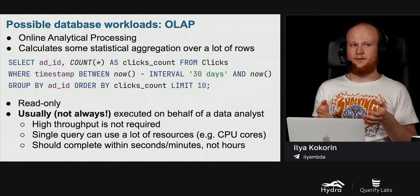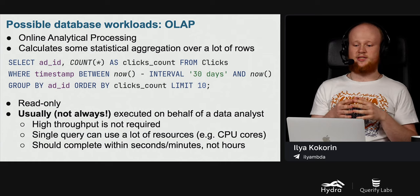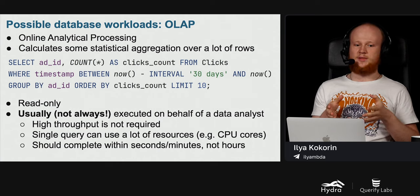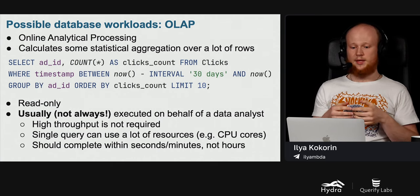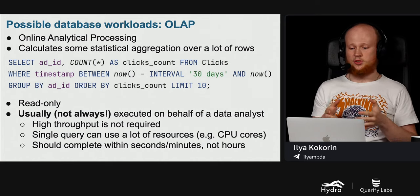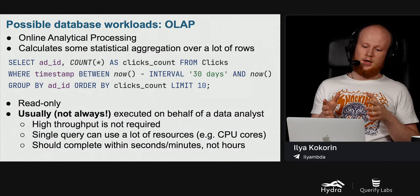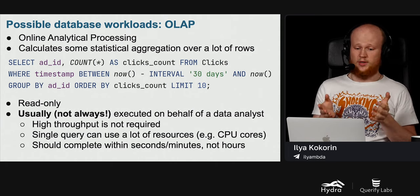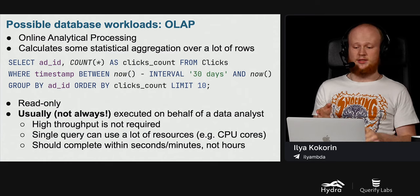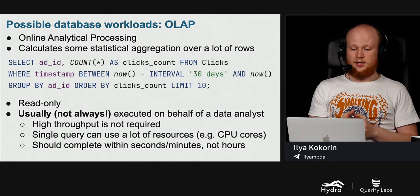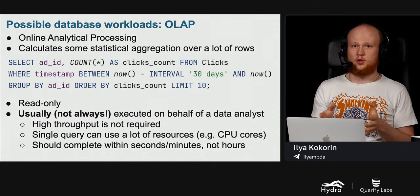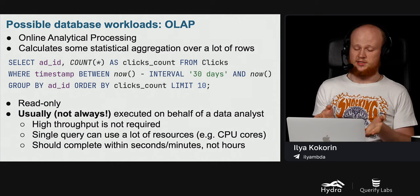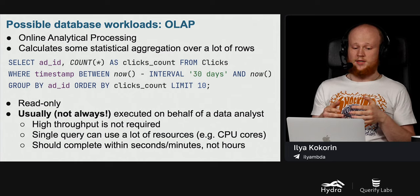The second type is OLAP, or online analytical processing. Such queries calculate some statistical aggregation over a lot of rows. For example, suppose we have a database storing clicks on advertisements. Here we fetch all clicks made during the last month, count the number of clicks on each advertisement, and finally select the top 10 advertisements by click count. This query reads a lot of rows — in a high-load advertising system, it can be billions of clicks or even more.